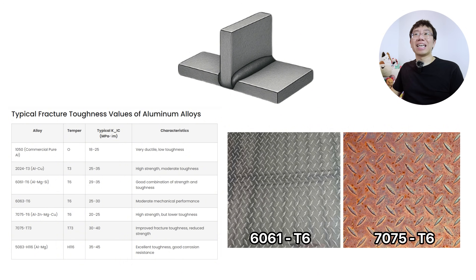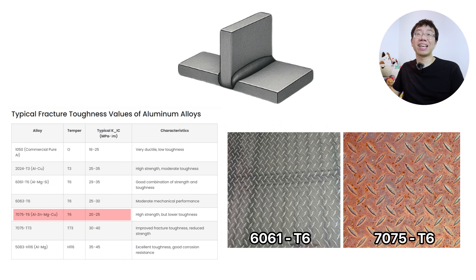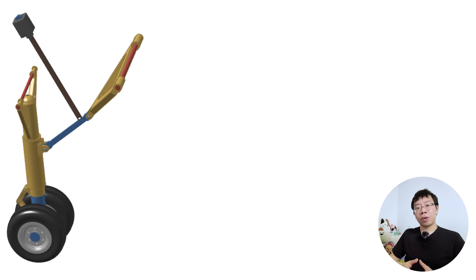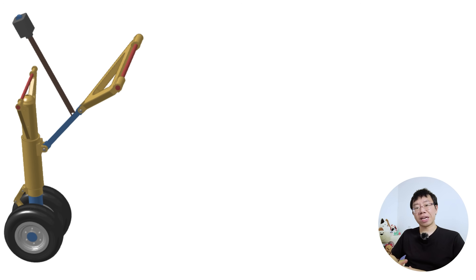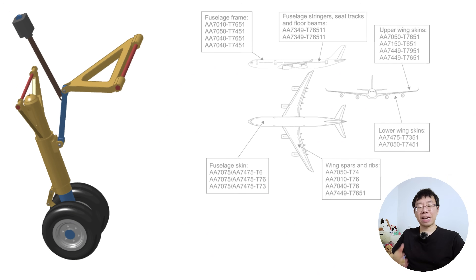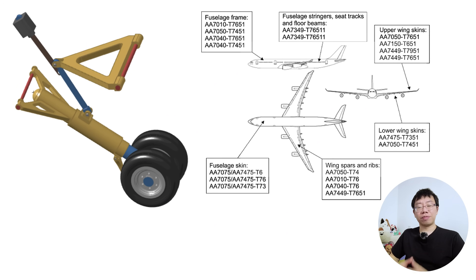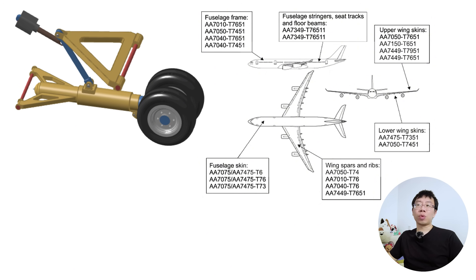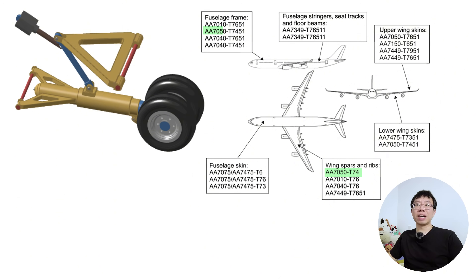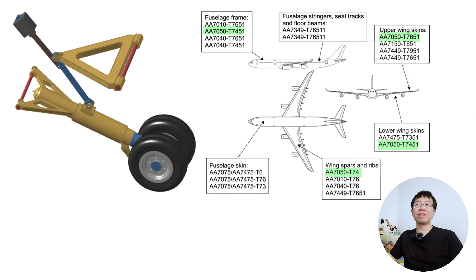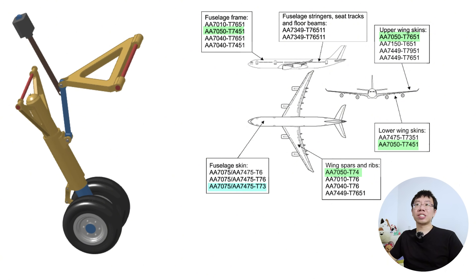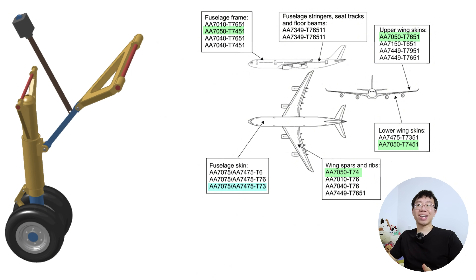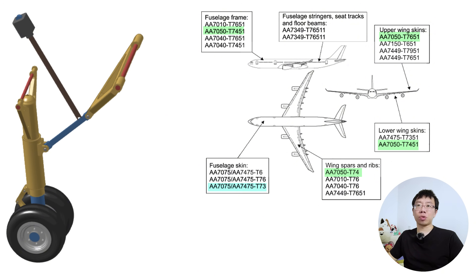7075 also has significantly lower fracture toughness and poor corrosion resistance compared to 6061. If your component is subject to cyclic loading in corrosive environments — like a landing gear assembly — 7075 is at risk of stress corrosion cracking. In these cases, we often use a 7050 alloy or a specific T73 temper, which sacrifices some raw strength to gain resistance to environmental cracking.